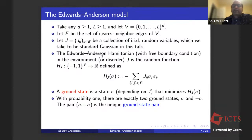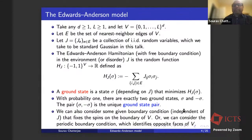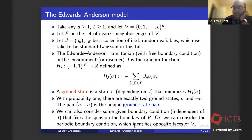In the case of continuous disorder — standard Gaussian, for example — with probability one there are exactly two ground states, σ and −σ, and this pair is called the unique ground state pair. We can also consider some given boundary condition that doesn't depend on J by fixing the spins on the boundary, in which case there is exactly one ground state, or we can consider periodic boundary conditions, which identify opposite faces of V.